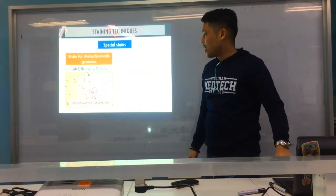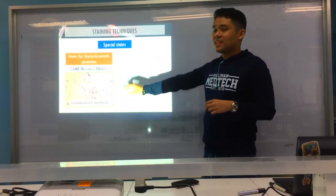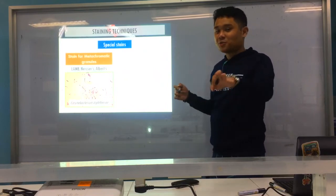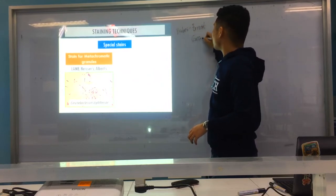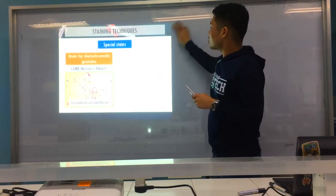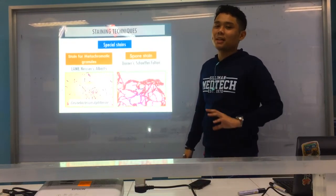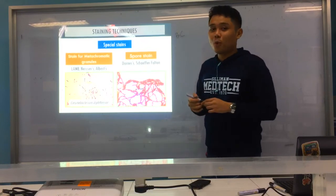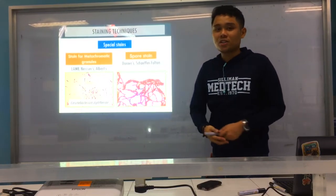For metachromatic granules, you have Loeffler's, Neisser's, and Albert's stains. A good example of bacteria that produce metachromatic granules is Corynebacterium diphtheriae. These are also known as Babes-Ernst granules — that's the name of the metachromatic granules in Corynebacterium diphtheriae. For spore stains, you have Dorner's and Schaeffer-Fulton. The medically important bacteria that produce spores are only two: Bacillus and Clostridium.